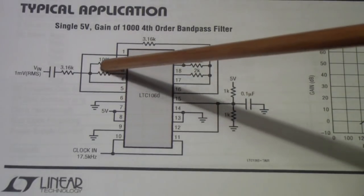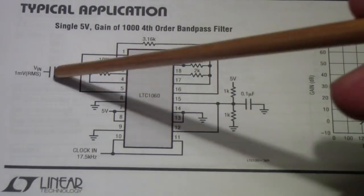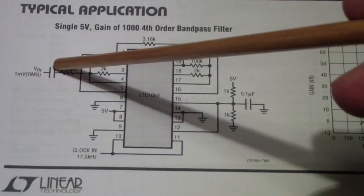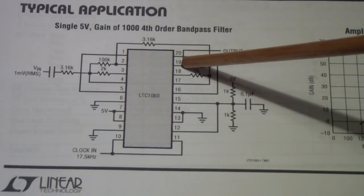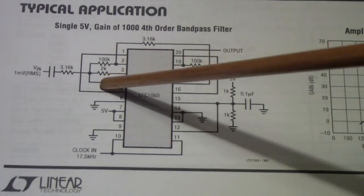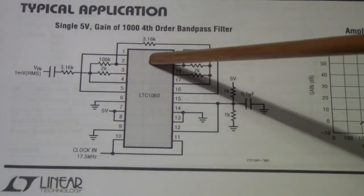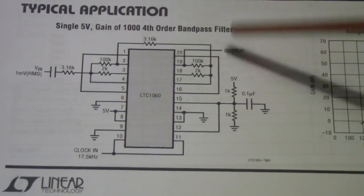So for example you see this filter network here and the input coming in and the output coming from this filter section. So basically it comes into this filter section, comes around, goes through this filter section, and comes out.